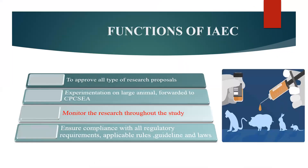Then what are the functions of the IAEC? IAEC will review and approve all types of research proposals involving small animal experimentation before the start of the study. For experimentation on large animals, the case is required to be forwarded to CPCSEA in the prescribed manner with the recommendation of IAEC. IAEC is required to monitor the research throughout the study and after completion of the study through periodic reports and visits to the animal house and laboratory where the experiments are conducted. The committee has to ensure compliance with all regulatory requirements, applicable rules, guidelines, and law.